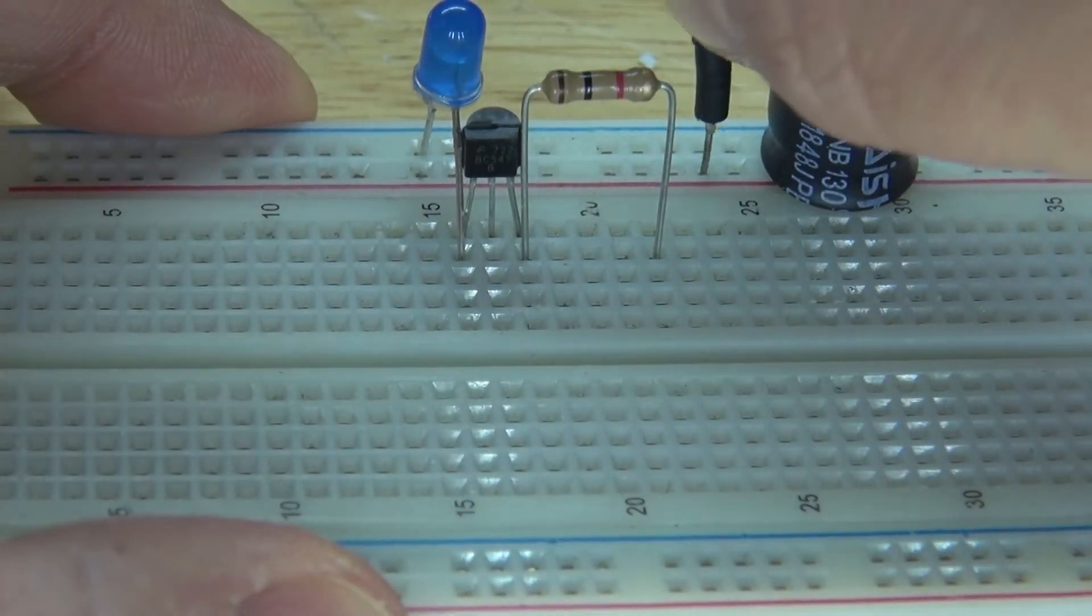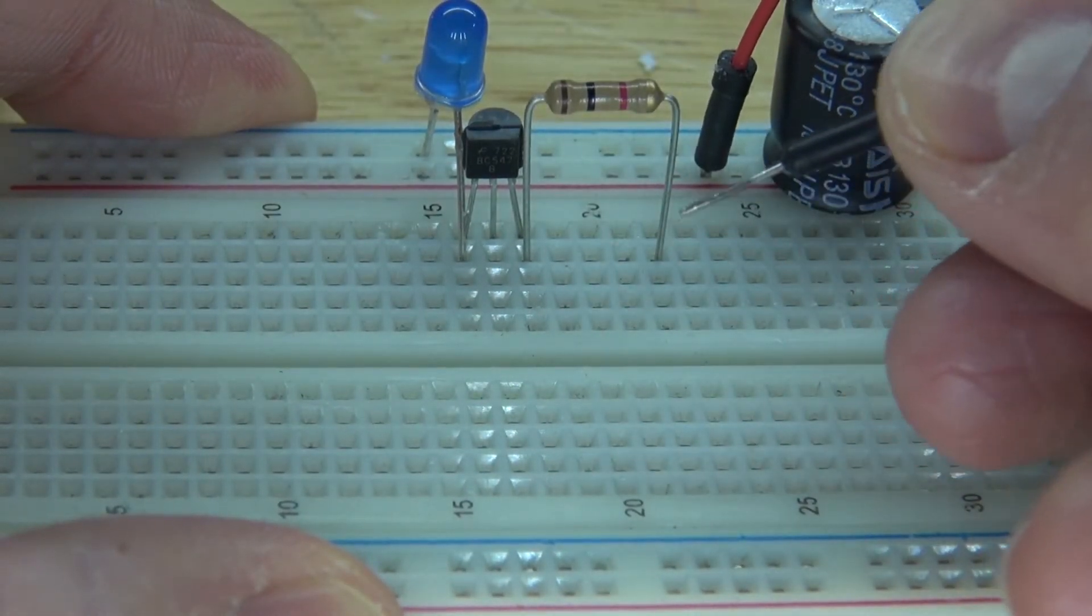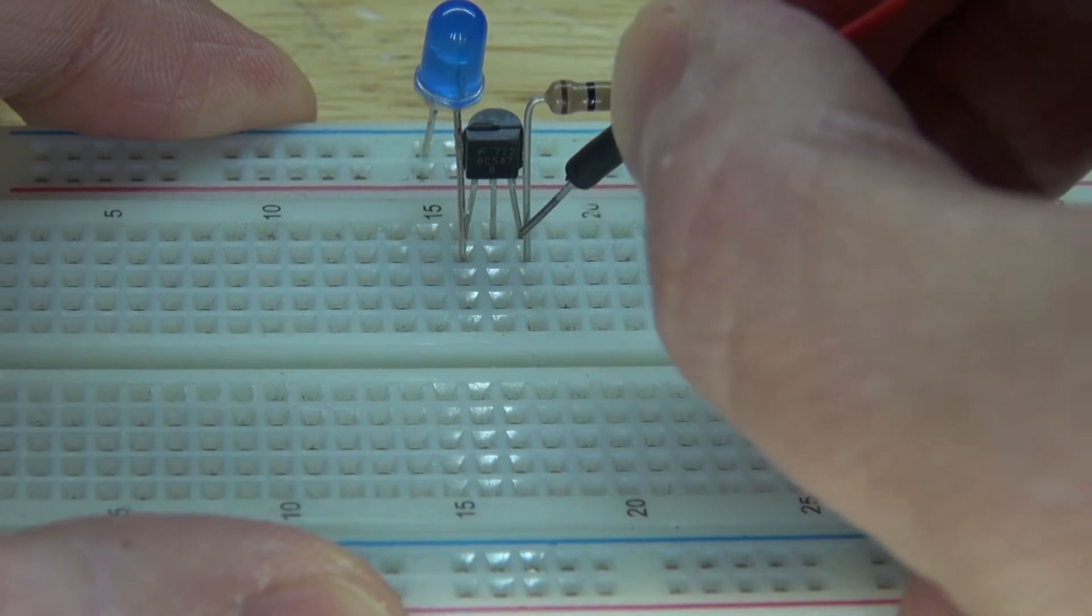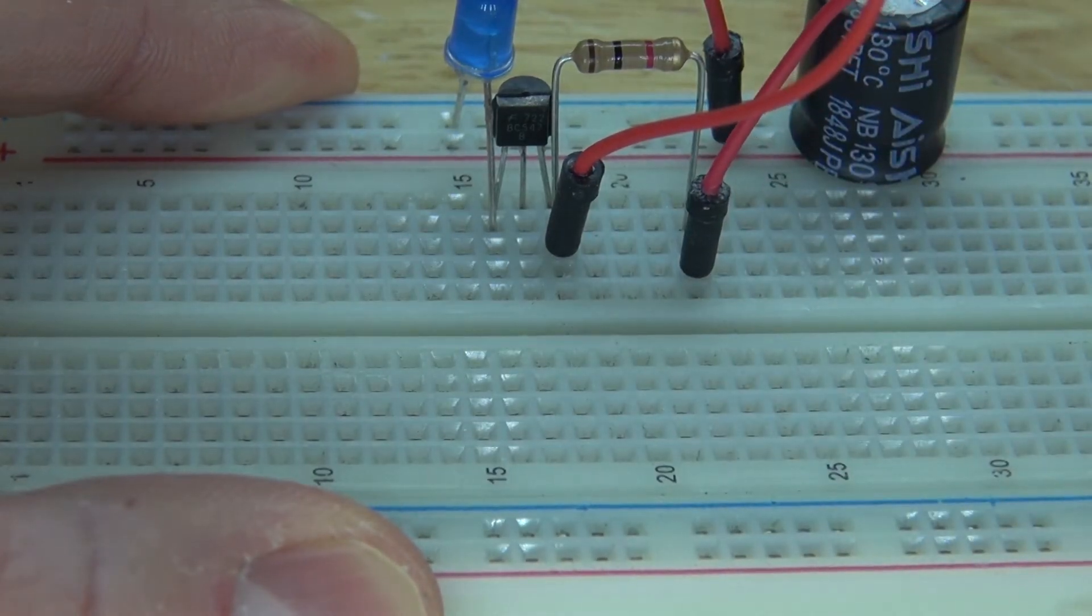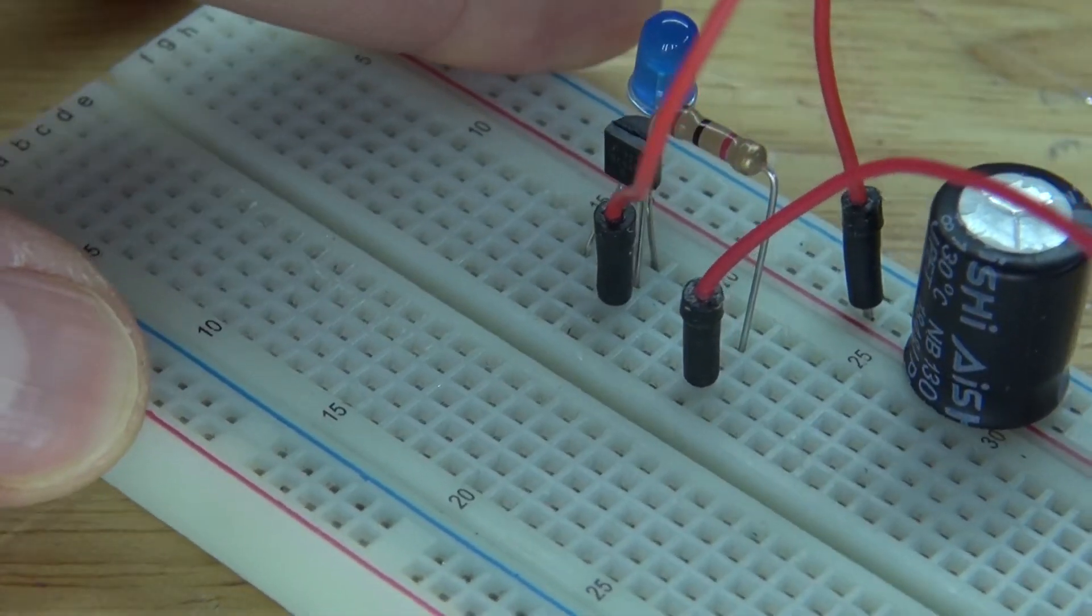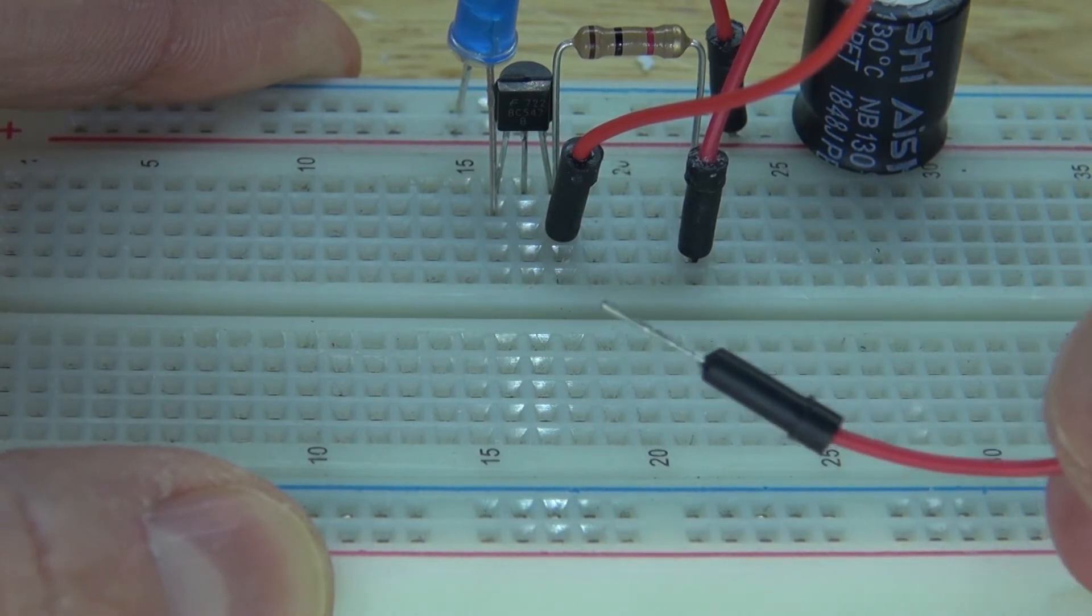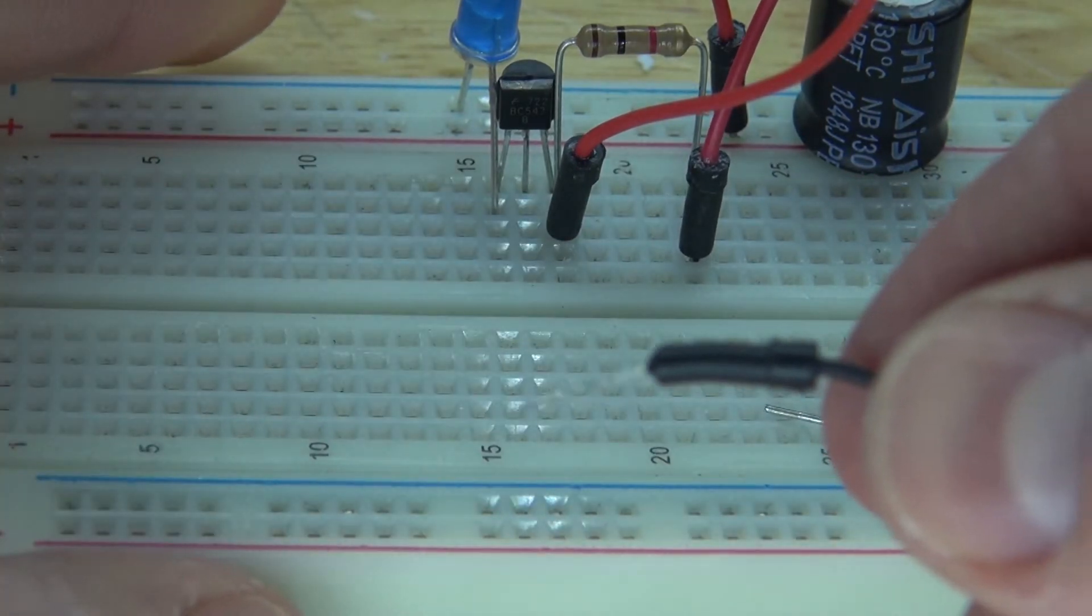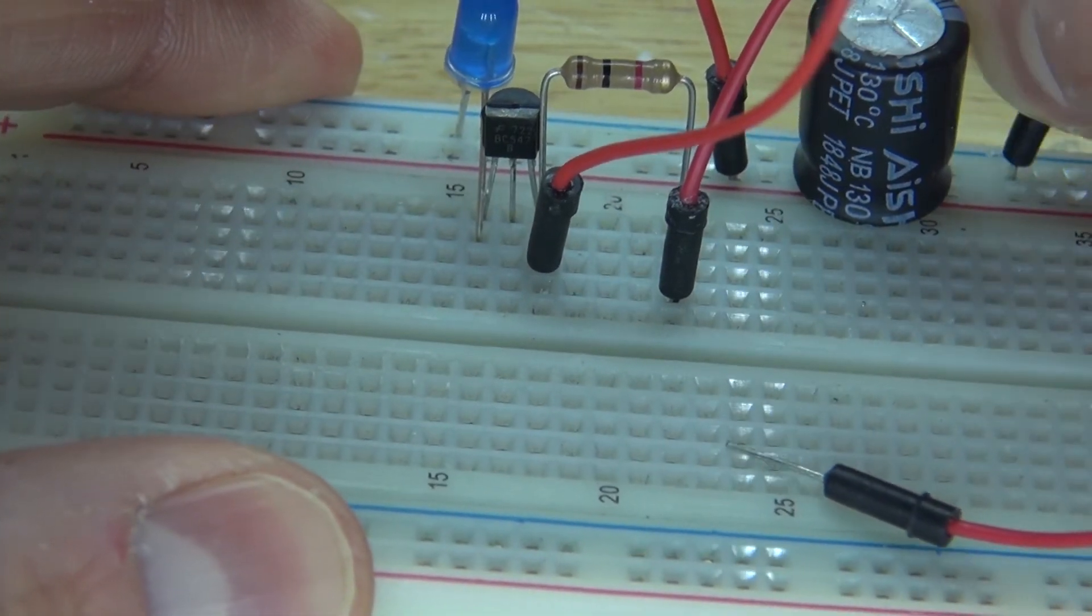Next I'm going to take this positive jumper wire and connect it to the positive rail, then take the other end and connect that to the emitter. Next connect another positive jumper wire to the 1K ohm resistor, and the other end will connect to the positive input voltage. Next I'll take this negative jumper wire and connect that to the negative rail, which will connect to common ground.